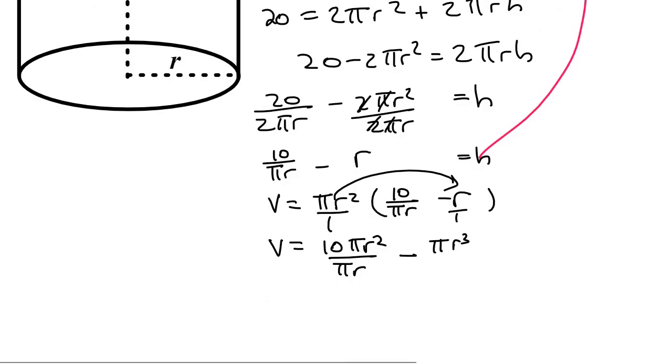Now what we want to do is just simplify that a little bit, so the π's cancel over there and one of the r's would cancel as well. And so you'd be left with 10r minus πr³. Now to find, so there's our volume expression now, and we only have one variable, just r, you can see that.